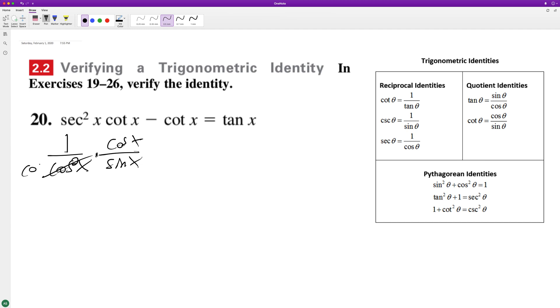So this just becomes cosine x and this cancels out. We get one over cosine x sine x minus cotangent, which is cosine x over sine x.